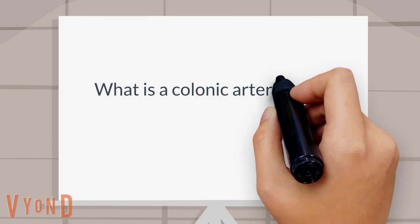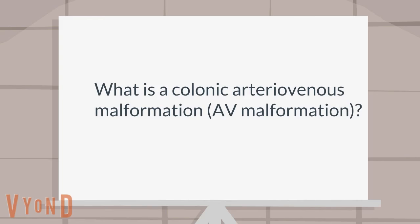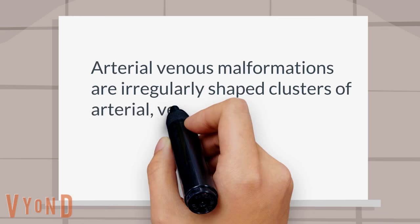What is a colonic arteriovenous malformation? AV malformations are irregularly shaped clusters of arterial, venous, and capillary vessels within the submucosa of the bowel wall.